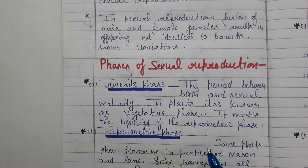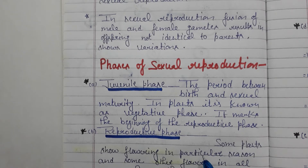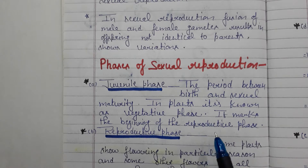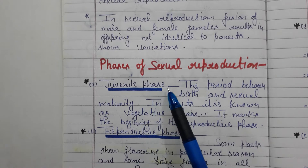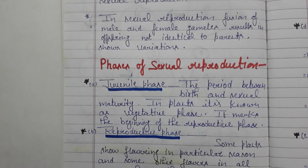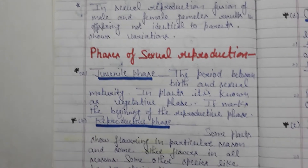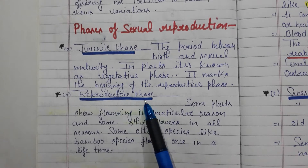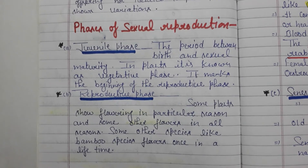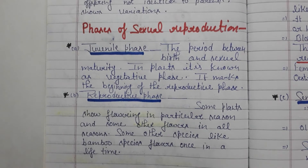When we talk about human beings, secondary sexual characters and hormones — their development and growth starts. This tells us that the juvenile phase is over and the reproductive phase is starting.